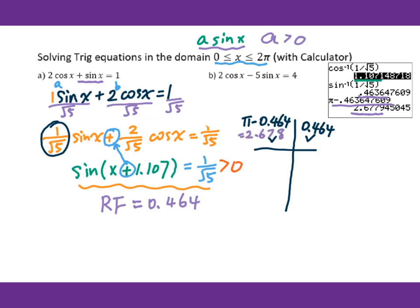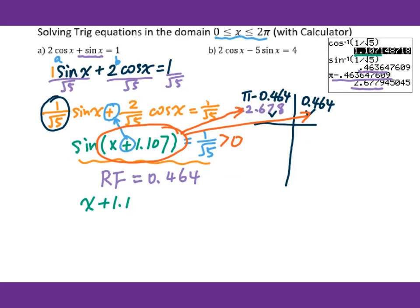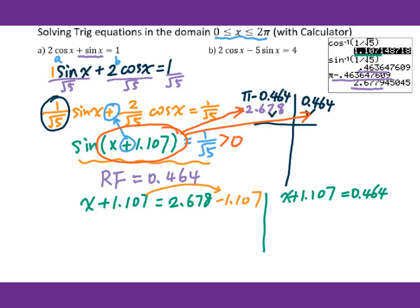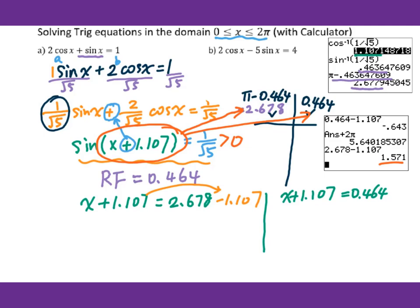The angle is x + 1.107, so we set up two equations: x + 1.107 = 0.464 and x + 1.107 = 2.678. Solving the first equation by subtracting 1.107, we get x₁ = 1.571. Now solving the second equation, subtracting 1.107, we get x = −0.643.